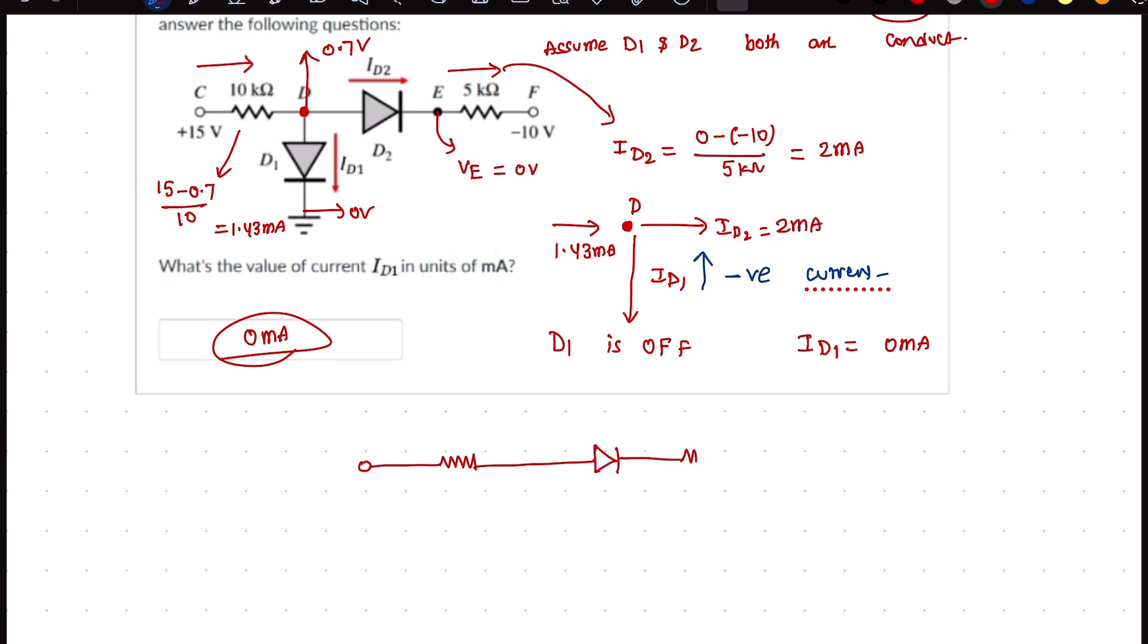In that case, this is -10 volts, this is 5 kilohm, this is ID2, and this is 10 kilohm resistance with 15 volts. So in this case ID2 must be 15, and this voltage drop must be 0.7, so -0.7 and -(-10) over 10 + 5.